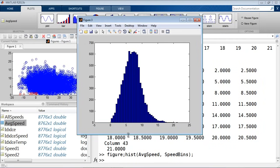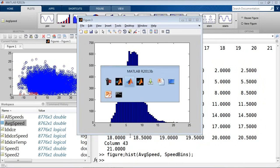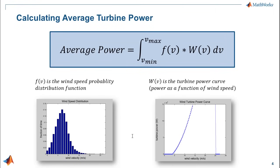Going quickly back to our slides, that's the first half of the equation. We've identified the wind speed distribution. Now we just need to identify the turbine power curve, and then we can calculate the average power.